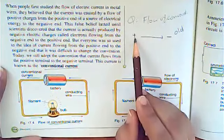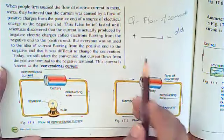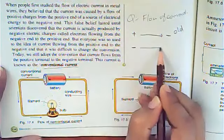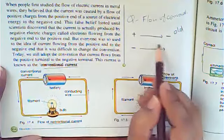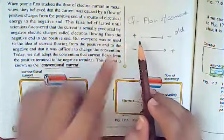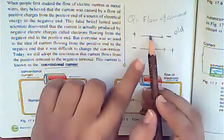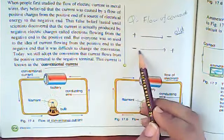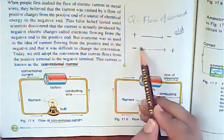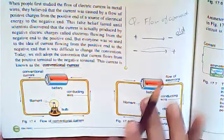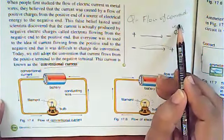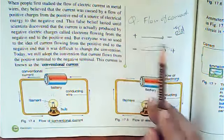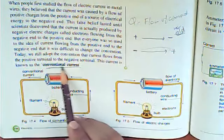The old concept was that current always flows from positive to negative terminal. But later it was discovered that it is actually electrons — electrons are the particles that move throughout the circuit and produce current. They move towards the positive side. Previously, people thought that movement of positive charge resulted in production of current, but that was the old concept. According to the new, correct concept, electrons carry negative charge and they move throughout the circuit.